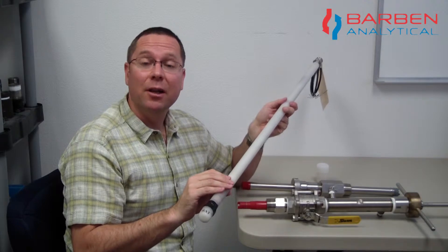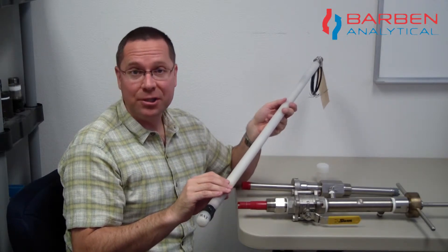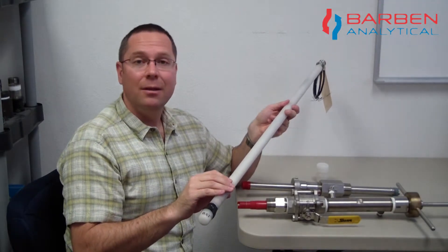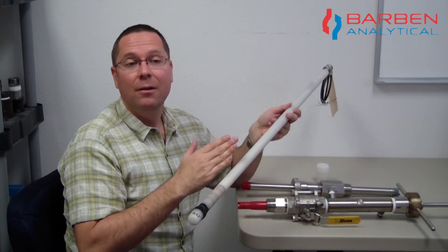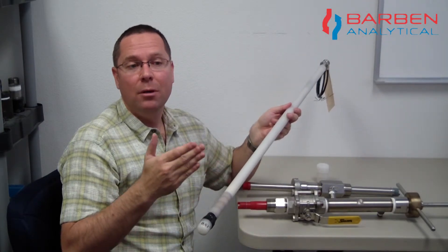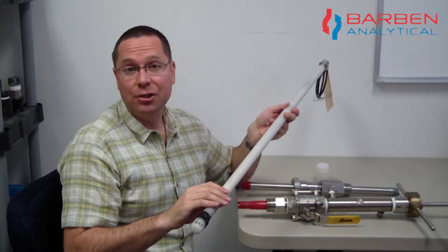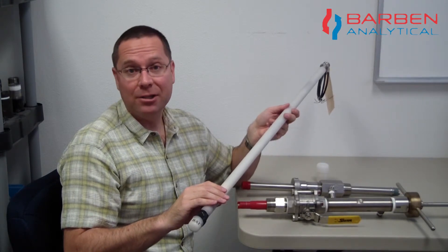So the 567 sensor is available in 16, 24, and 36 inch lengths. And this provides you with enough option to get through pipe nipples or flanges that are already pre-existing on your process.